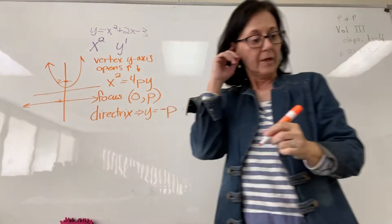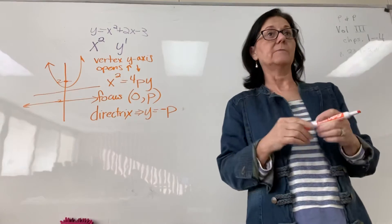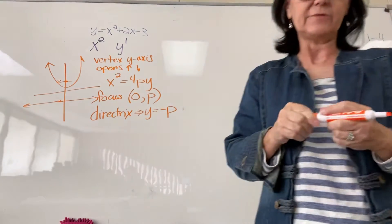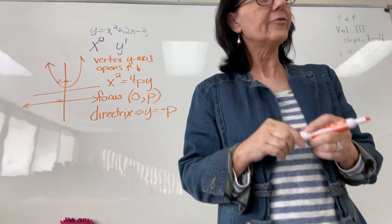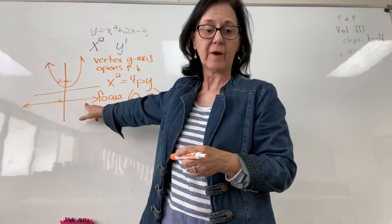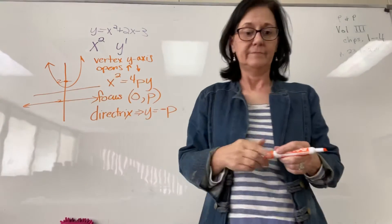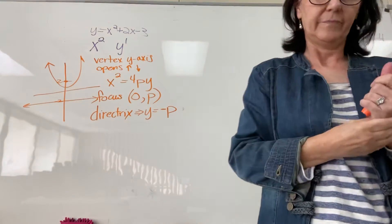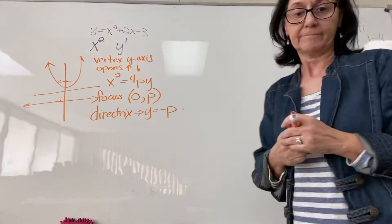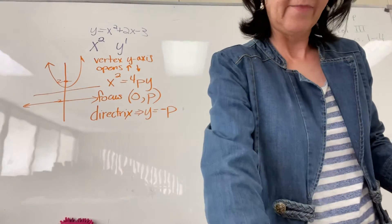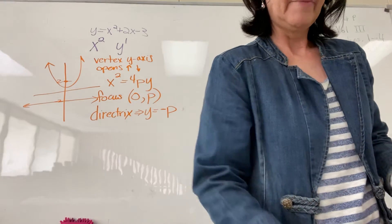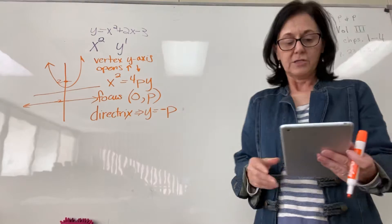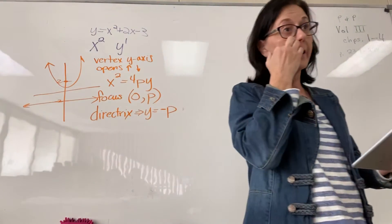Why do we have a directrix? The directrix is a hyphenated line — more like an asymptote. If you look at the definition of what a parabola is, the directrix is a fixed line not through the focus point, such that the distance from any point on the parabola to the directrix is the same value as the distance from that point to the focus. The parabola always bends away from the directrix and toward the focus point.